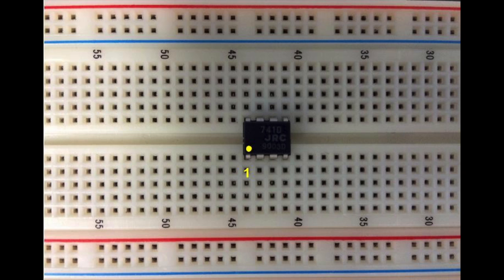Every chip has a circle above pin 1. Here I label it in yellow. To the right of pin 1 is pin 2, 3, and 4.